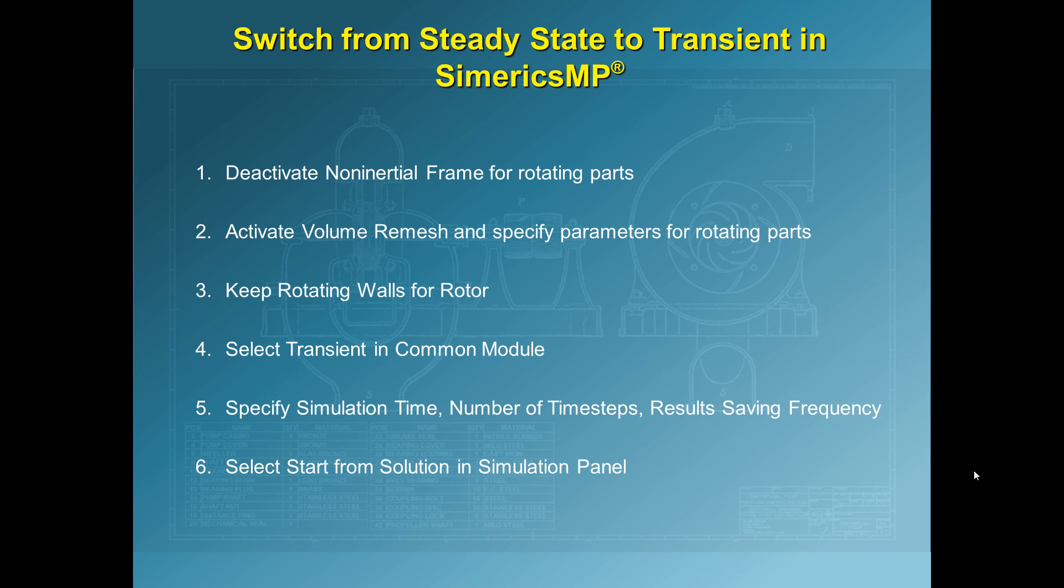When switching from steady-state to transient in SimericsMP, the following steps are required. First, the non-inertial frame for rotating parts must be deactivated. The non-inertial frame accounts for the additional body forces due to the rotation in a steady-state run, but for a transient run, the body forces occur intrinsically in the simulation since the rotor is actually moving relative to the volute. Next, the volume remesh algorithm must be activated and the associated parameters specified. The rotating wall boundary conditions for the rotor remain the same as for a steady-state run.